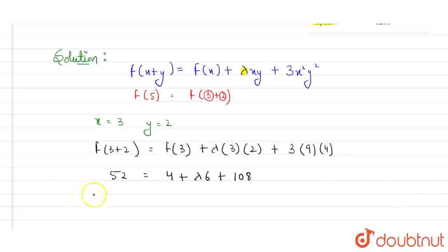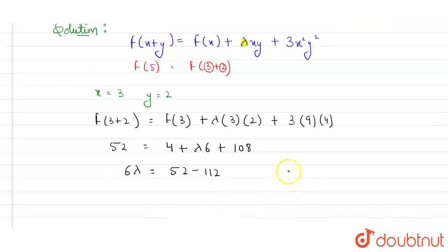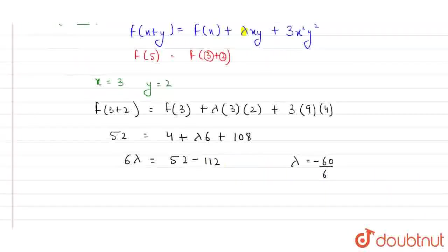And here I'll get 6 lambda is equals to, now, 52 minus, here sum will be equals to 112. Now, on solving this, my lambda will be equals to minus 60 by 6. And from here, I can conclude that my lambda value is equals to minus 10. My lambda value is equals to minus 10.